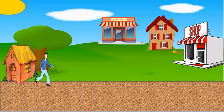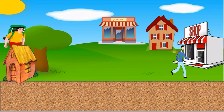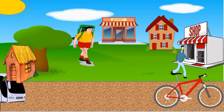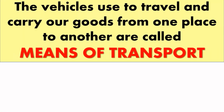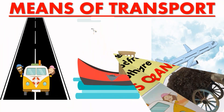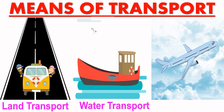We can walk to places that are nearby, but some places are far away and we cannot walk to such places because it takes lots of time to travel on foot. So we use bicycle, bus, train, etc. The vehicles used to travel and carry our goods from one place to another are called means of transport. We use different means of transport to travel, and they are of three types: land transport, water transport, and air transport.